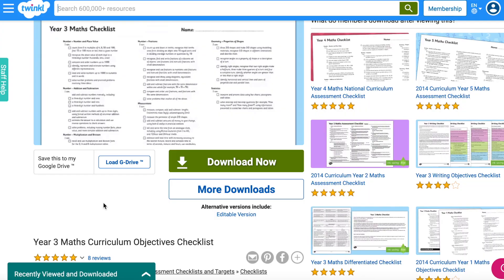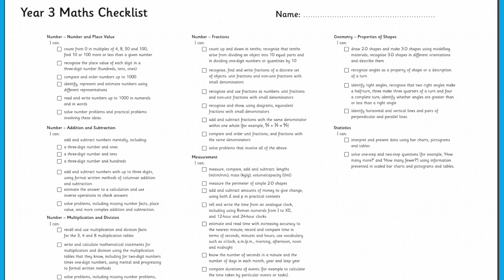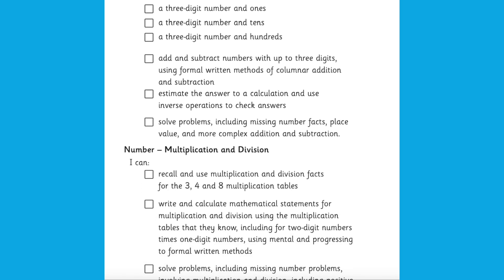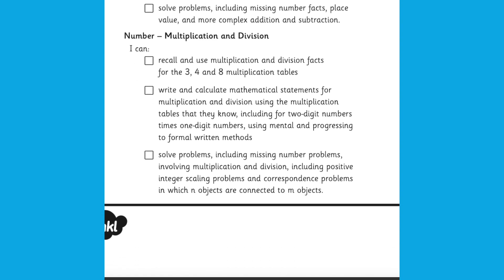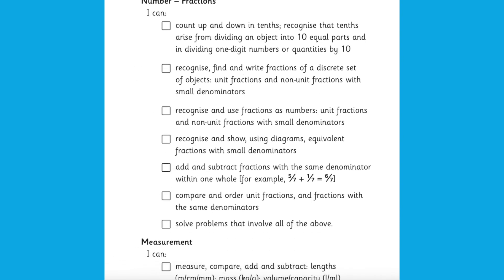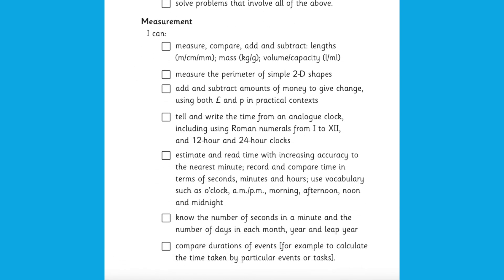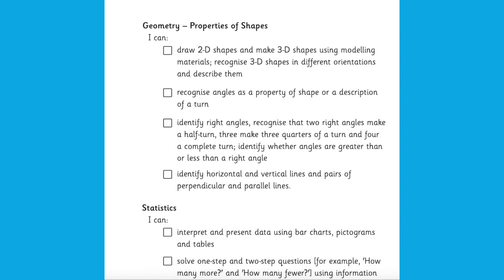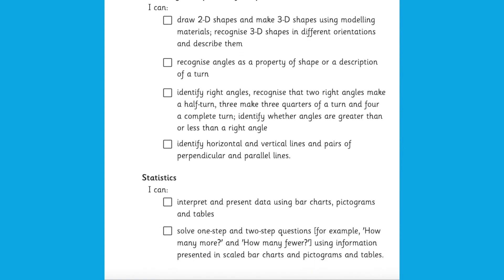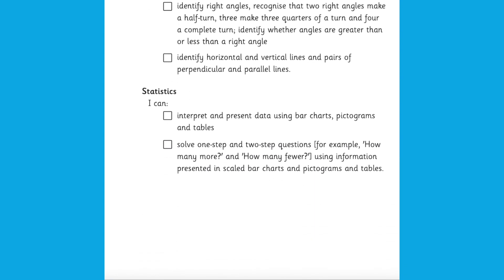Twinkle have made some brilliant checklists across all year groups. These are a great simple solution for checking children on meeting their maths objectives each week. These objectives are set out in the national curriculum. The checklists can really help to reduce your workload with end-of-term assessment grids, as you can quickly scan through these and mark them off.